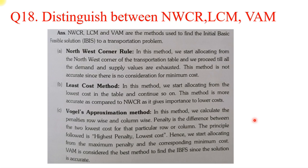The last question: distinguish between NWCR (Northwest Corner Rule), Least Cost Method, and VAM. So these are the 18 most important questions that you need to learn for your external paper. I hope everyone has noted down the questions and taken screenshots of the answers to prepare accordingly.